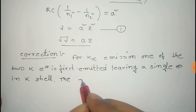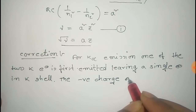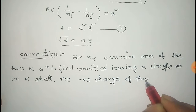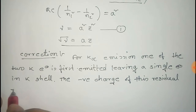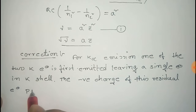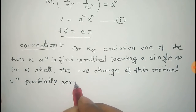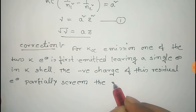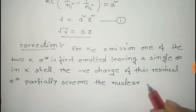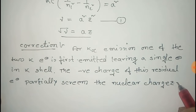The remaining electron in the K shell leaves a single residual electron. The negative charge of this residual electron partially screens the nuclear charge, creating a screening effect on the nuclear charge Z·e.